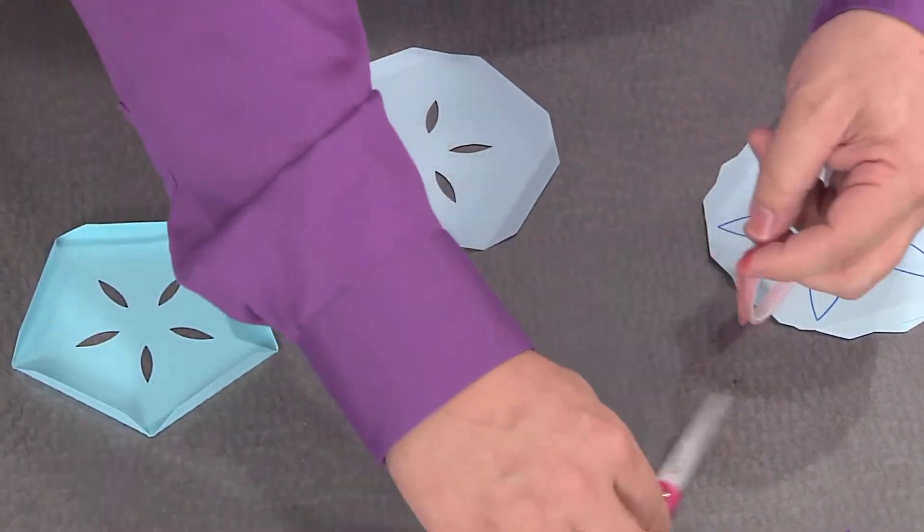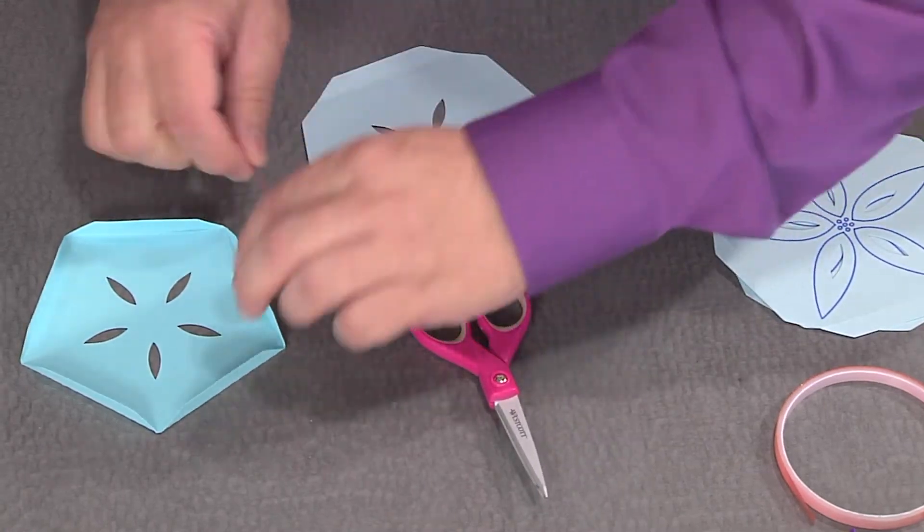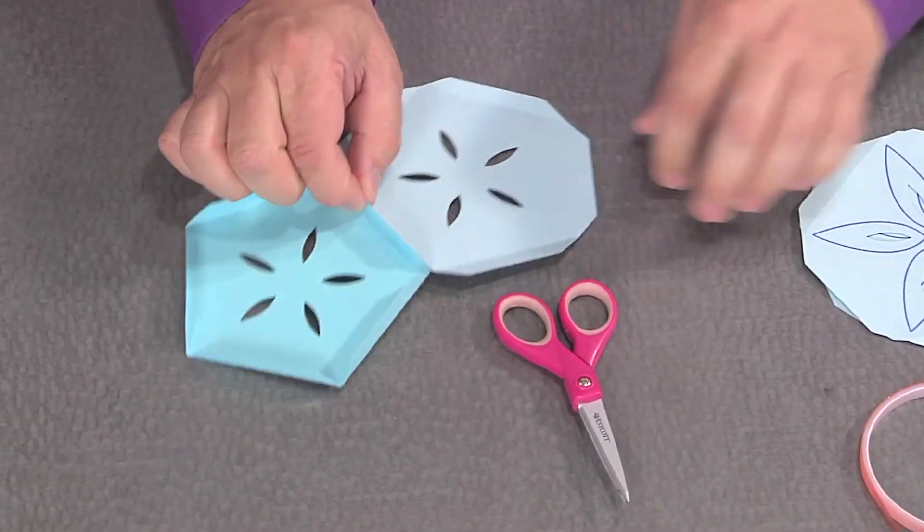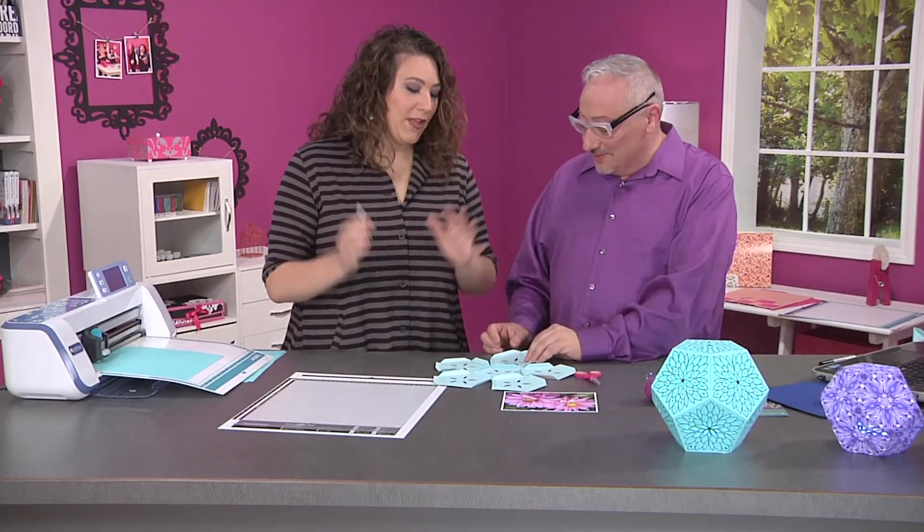Now you want to use a really strong adhesive. We'll just cut a little piece of it and attach it on here, just like this. You'd peel that off and attach. When you're all done, you'll have this big flower. Ta-da.